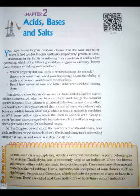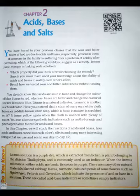Table 2.1: A table is given with columns — sample solution, red litmus solution, blue litmus solution, phenolphthalein solution, and methyl orange solution. You have to fill this table. These indicators tell us whether a substance is acidic or basic by a change in color. There are some substances whose odor changes in acidic or basic media. These are called olfactory indicators.